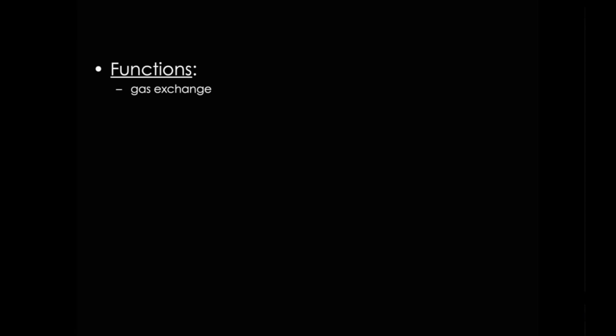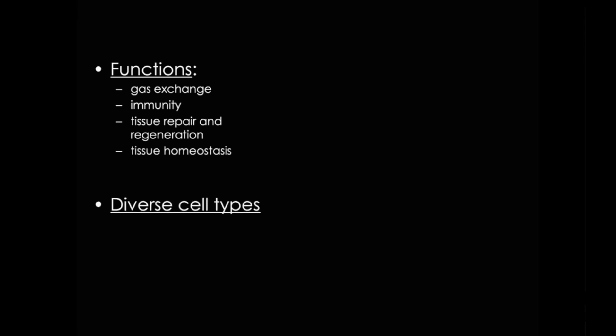We know that blood is a distributing vehicle. That is, it transports oxygen, carbon dioxide, metabolites, and hormones throughout the body. It also participates in immunity and tissue repair and regeneration. It's also critical for homeostatic functions such as heat distribution, regulation of body temperature, and maintenance of acid-base and osmotic balance. Blood is composed of diverse cell types. I'll describe red blood cells here and the rest in Part 2 of the series.